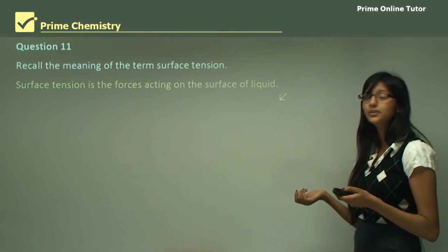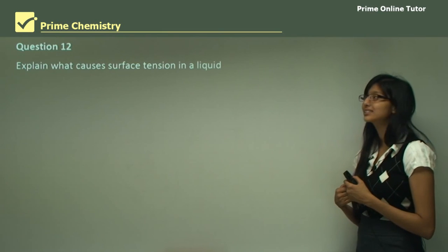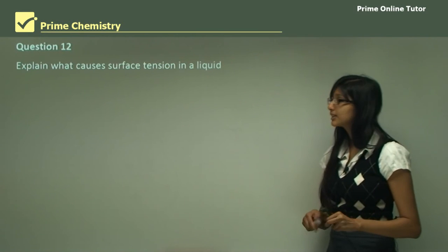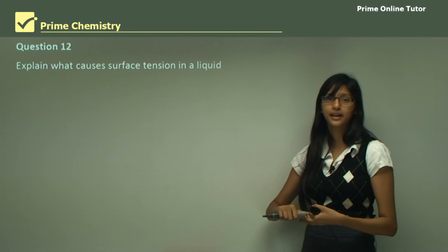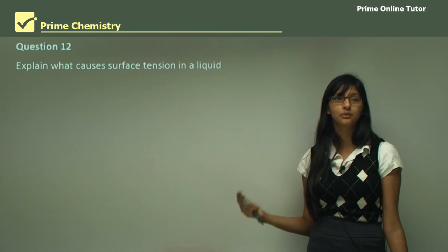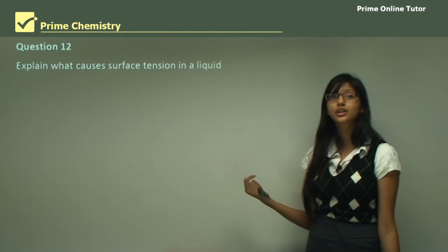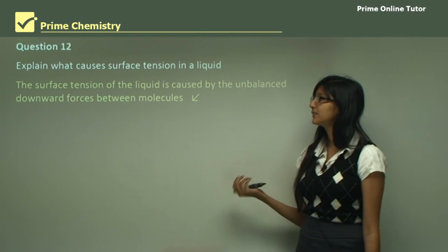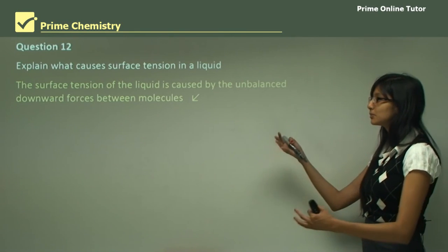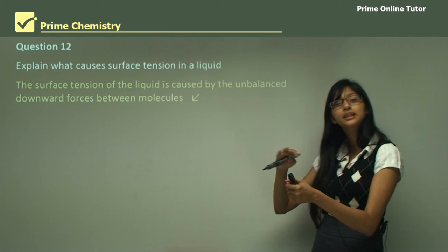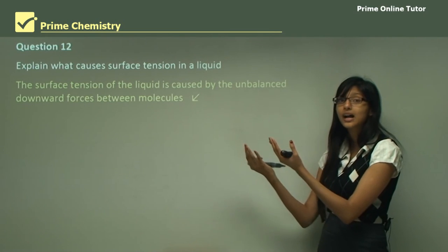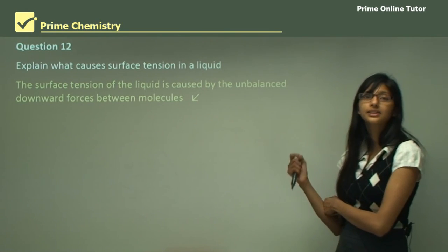Question 12 asks you to explain what causes surface tension in a liquid. Notice the verb is 'explain,' so you have to relate cause and effect. The effect is that liquid has a surface tension, but you must say why. A surface tension in liquid is caused by an unbalanced downward force between molecules. Because molecules provide a greater upward force towards the surface, there is an unbalanced downward force, and due to that, all liquids have a surface tension.